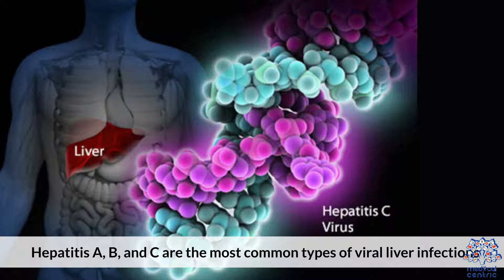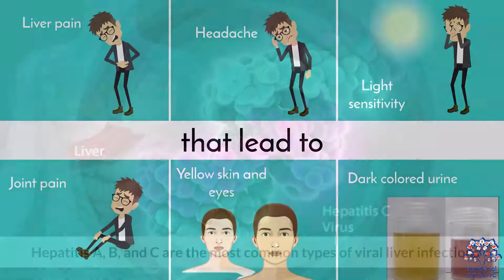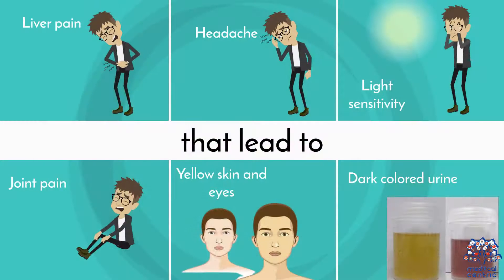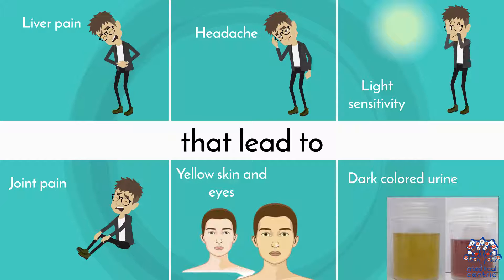Hepatitis A, B, and C are the most common types of viral liver infections that lead to liver pain, headache, light sensitivity, joint pain, yellow skin and eyes, and dark-colored urine.